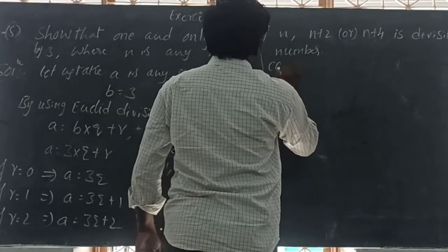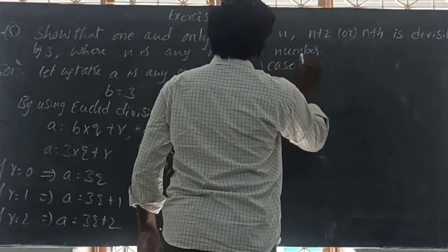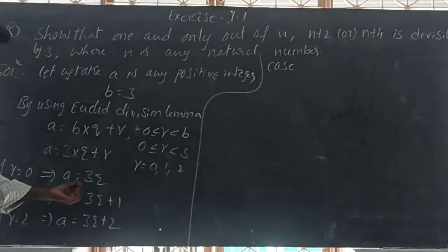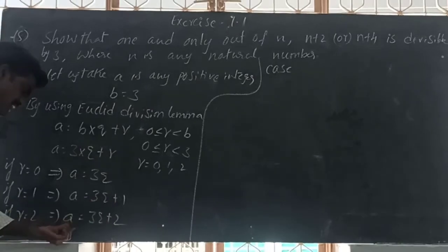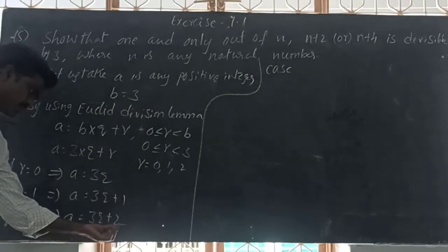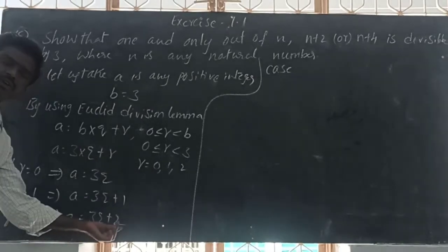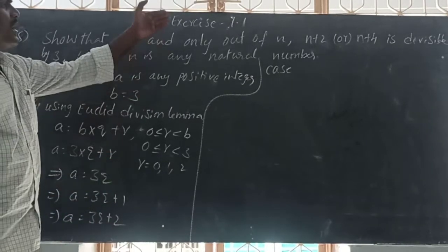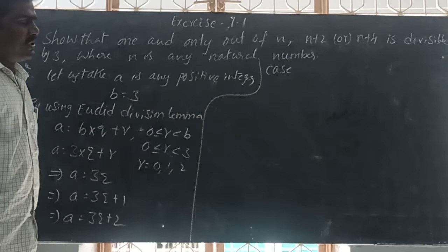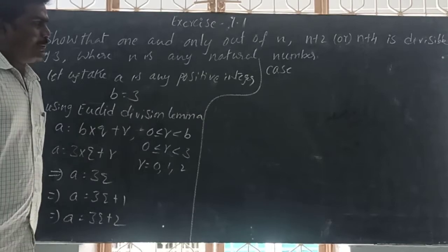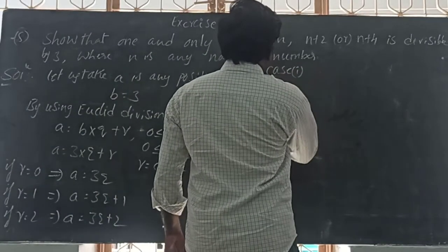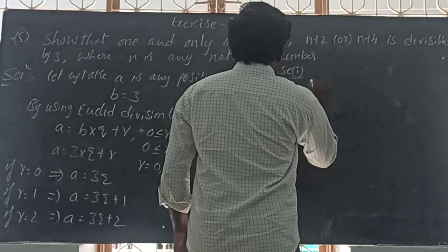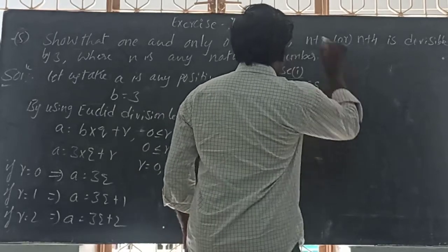Case 1. Here, how many numbers are there? Three numbers we can get. What are they? A is equal to 3Q, A is equal to 3Q plus 1, A is equal to 3Q plus 2. So in this, any one of the numbers is divisible by 3. So let us take Case 1: N is equal to 3Q.